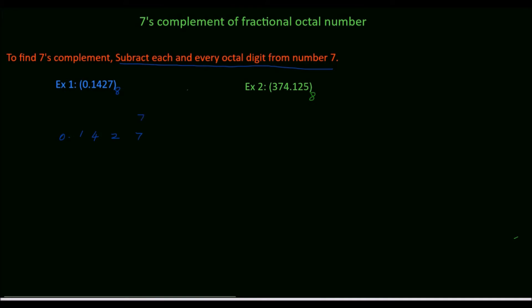So, subtract the digits from 7. Before the fractional point, we don't have any valid digits. So, no need to subtract 0 from 7.